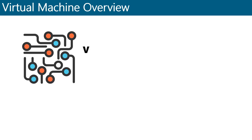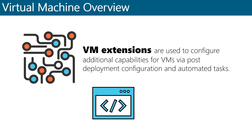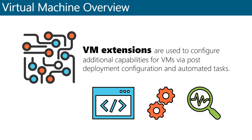VM extensions are used to configure additional capabilities for your VM via post-deployment configuration and automated tasks. You would typically use extensions to configure your VM by running a custom script when the VM is provisioned. You might also use extensions to set up DSC, or desired state configuration, on a VM so you can automate its configuration and environment. VM extensions are also often used to collect diagnostics data from a VM to monitor the health of the applications running on it.